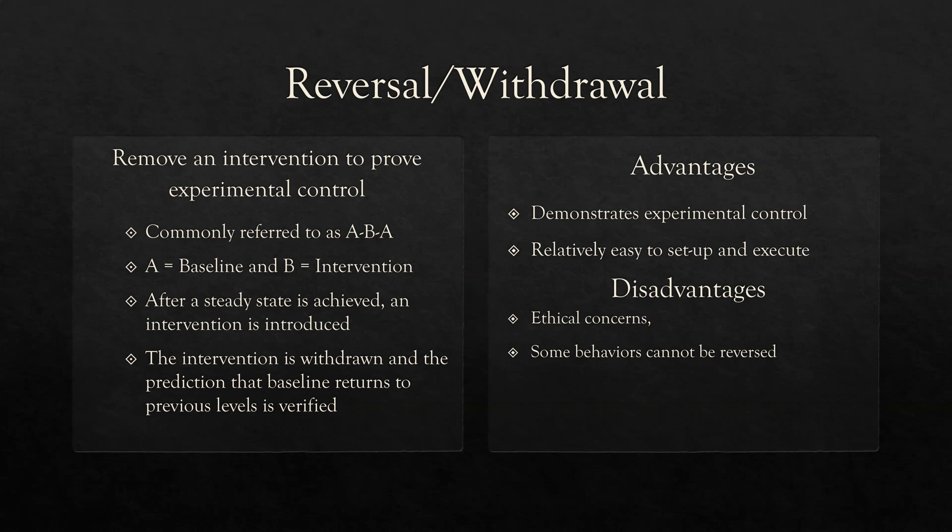You might see an ABCA design — all different types of things can be done with reversal and withdrawal — but the most basic and most common is a simple ABA: baseline, intervention, back to baseline. After a steady state is achieved, an intervention is introduced. We want a steady baseline. If we want to decrease a behavior and our baseline is already decreasing, we might not want to immediately intervene. However, if our baseline is steadily rising or flat, that's a good time to start the intervention. Intervention is withdrawn and the prediction that the baseline returns to previous levels is verified.